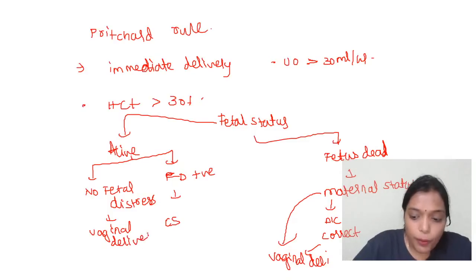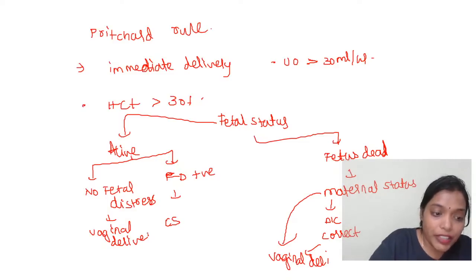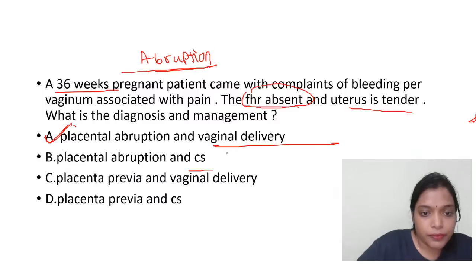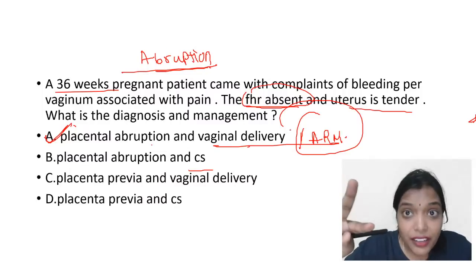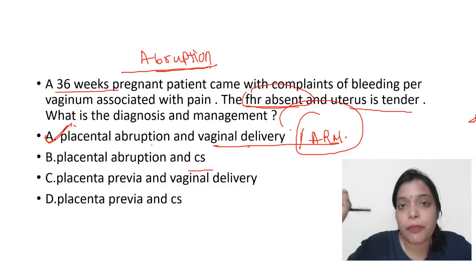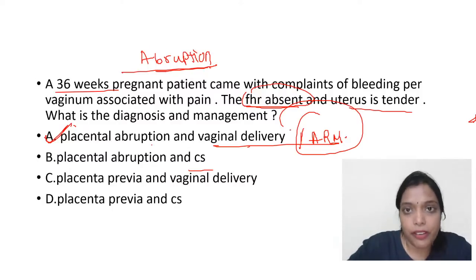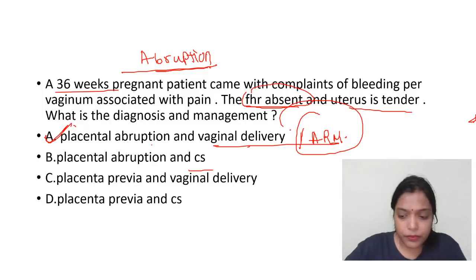If the option given was abruption with ARM (artificial rupture of membrane), you can also choose that. ARM has two benefits: it helps diagnose abruption — you'll see blood-stained fluid — and it is therapeutic because it augments and hastens labor. However, in IUDs we don't do ARM.